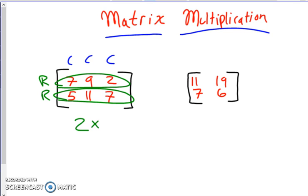We say the dimensions of that matrix are two by three. For this one over here, it has two rows and two columns. So we'd say the dimensions of that matrix are two by two.